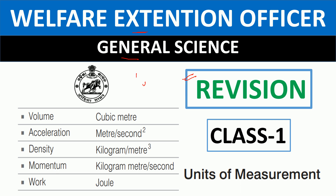We are going to talk about the general science exam. Whatever the pattern is, questions will be asked in the same way — it is very easy, don't worry. We are going to cover revision classes. In the first class, units and measurement discussion is a very important topic, and we will get about 5 questions from this topic. So let's start the video.